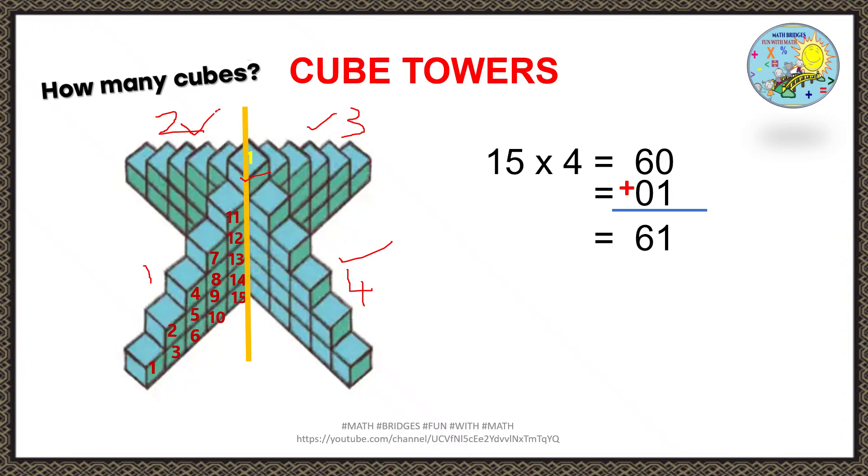This 60 plus 1 we are adding and we will get it as 61. 1 more thing, very important one. Observe this line. So this topmost, this cube, under this cube base, again there are cubes. This cube cannot stand alone. So under the cube also there are cubes are there.